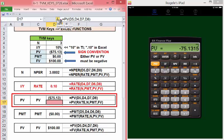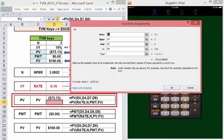In Excel, we need the function. We want to enter the cell references. Do not enter the values independently. The rate is in D5, 10%. Number of periods is in D4, 3. The payment is in D7, 0. The future value is in D8, 100. Press enter and there's our value.